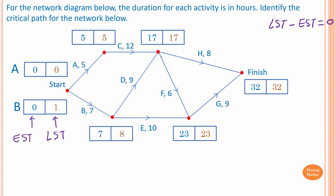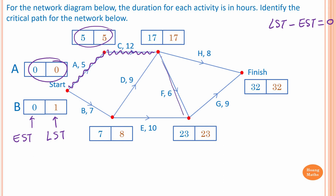Zero minus zero is zero, and five minus five is zero, so activity A is critical. For activity C, 17 minus 17 is zero, so activity C is critical. For activity F, to find the latest starting time we calculate 32 minus 8, which gives 24, not 17 — so that path is not correct.